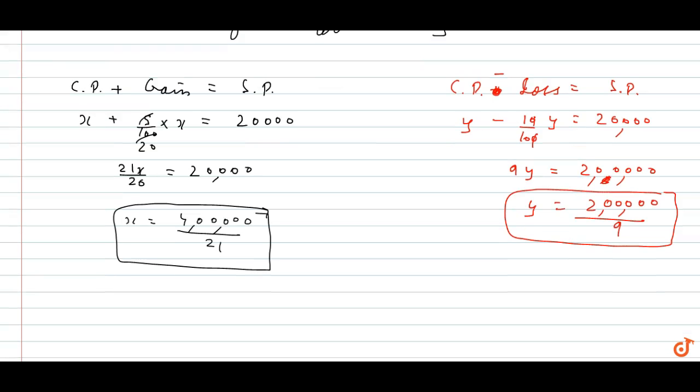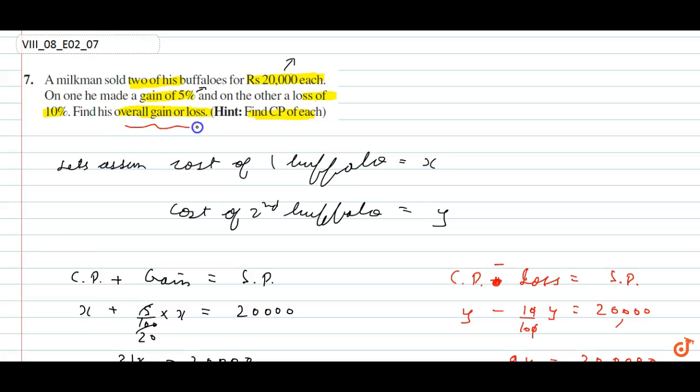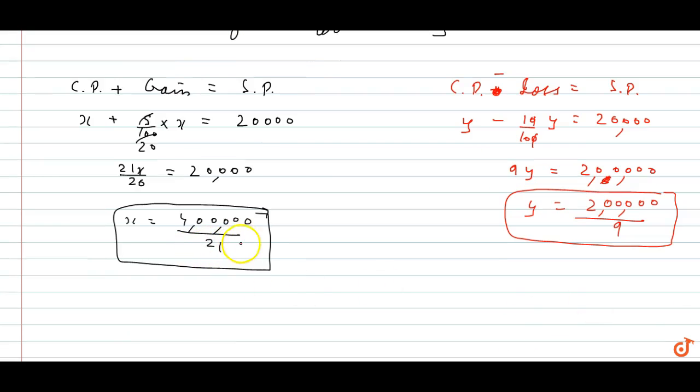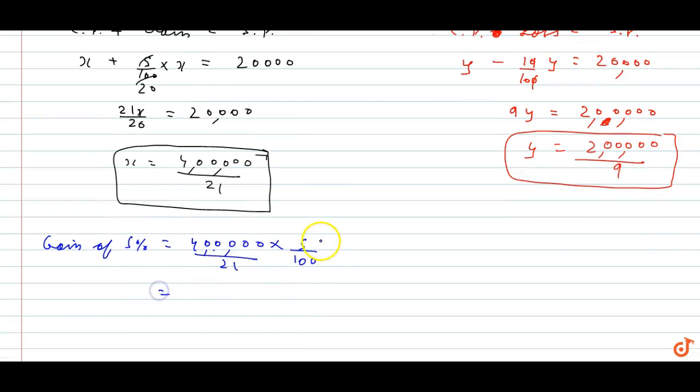This is the cost price of the second buffalo. Now we need to find overall gain or loss. For the first buffalo there was 5% gain, so gain of 5% will be 400,000 upon 21 into 5 upon 100, which equals 20,000 upon 21. This is the gain.